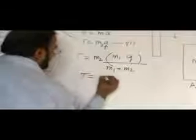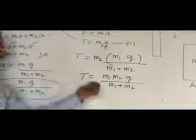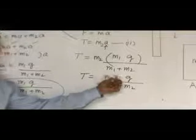This formula gives the acceleration. Now putting the value of A into equation number 2, we get T is equal to M2 times M1G over M1 plus M2. So tension T equals M1·M2·G over M1 plus M2. This is the tension formula. Thank you very much.